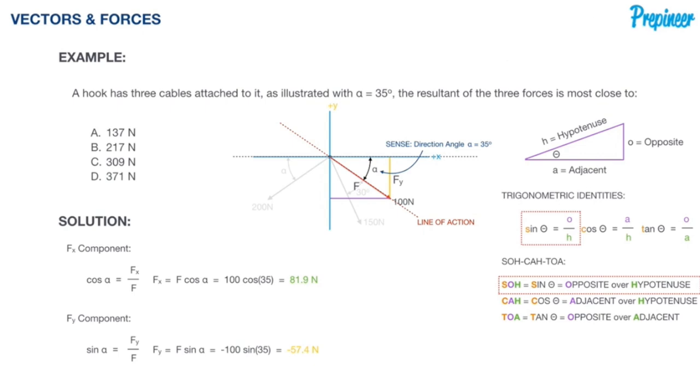Alright, so now that we have our components defined for the 100 newton force, I'm going to go ahead and bag these components. On the exam, it's probably going to be on your little dry erase pieces of paper. But I created a table up there in the upper right corner. Just put in these values right there, because we're going to need them later on when we go to determine what the resultant of the entire system is.